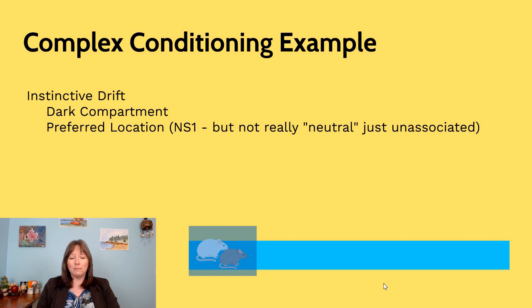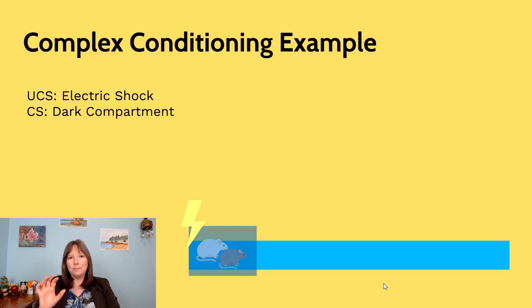But the next thing the researchers did was they hooked up a panel in the dark compartment so that if the rats were in the dark compartment they would receive a mild electric shock. Well, that's not good. They don't like being in electric shock, so the electric shock is going to be the unconditioned stimulus and receiving the shock is the unconditioned response.